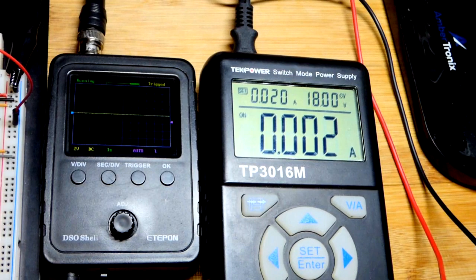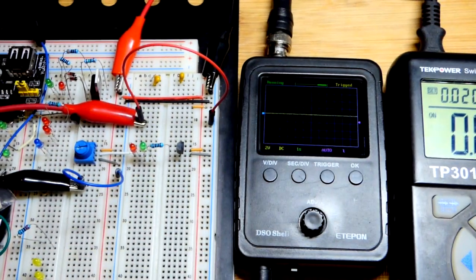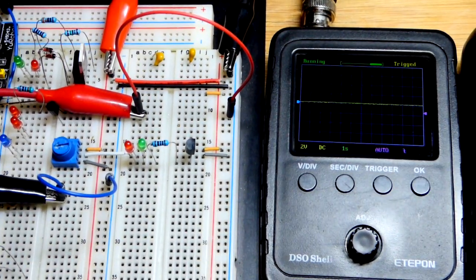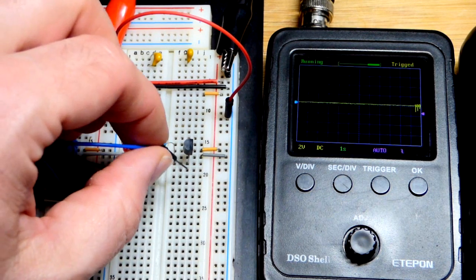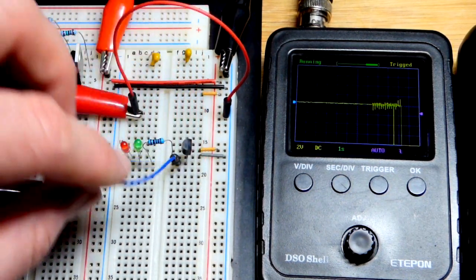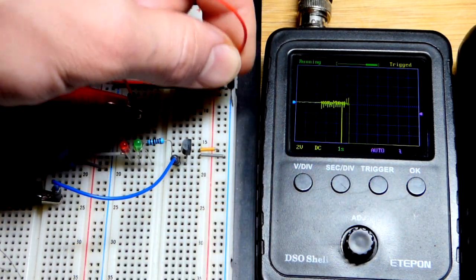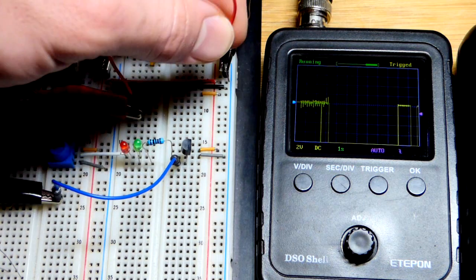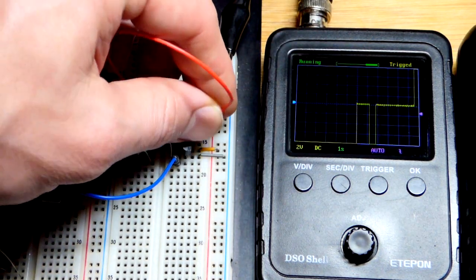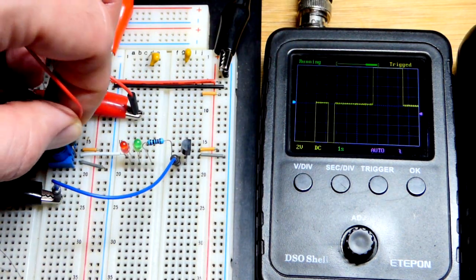We have the power supply there set to 18 volts and a maximum of 20 milliamps of current to protect everything if I do something wrong. Now our ground is the out right there for the integrated circuit. You can see we have the red jumper over there to negative. It went up, now it's floating. We're back to 0.